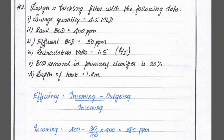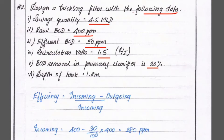Hello friends, welcome to Civil Engineering Exam. Today we are going to see a problem related to wastewater engineering in the topic of trickling filter. The question is: design a trickling filter with the following data. The quantity of sewage is 4.5 million liters per day, raw BOD is 400 ppm, effluent BOD is 50 ppm, recirculation ratio r/i = 1.5, BOD removed in primary clarifier is 30% of total BOD, and depth of tank is 1.8 meters.